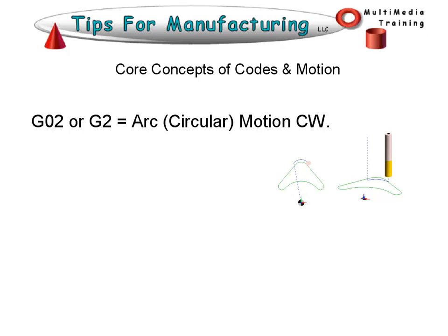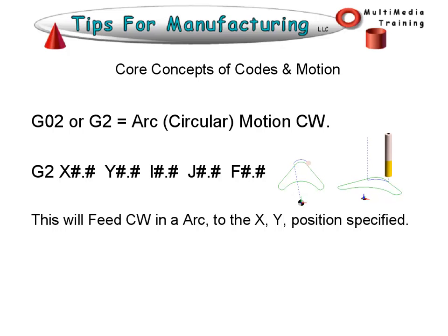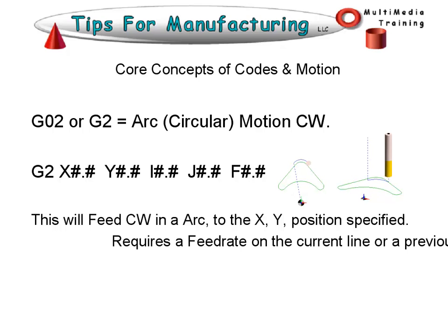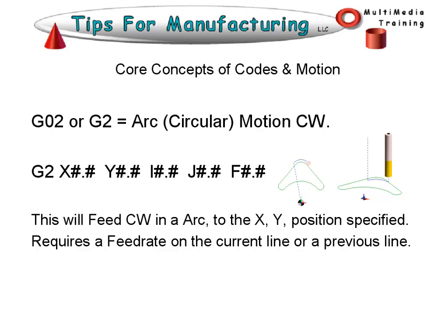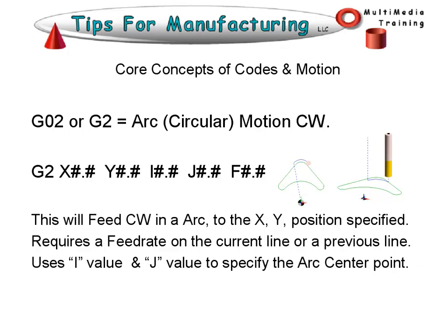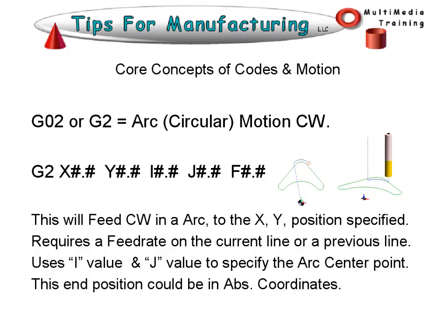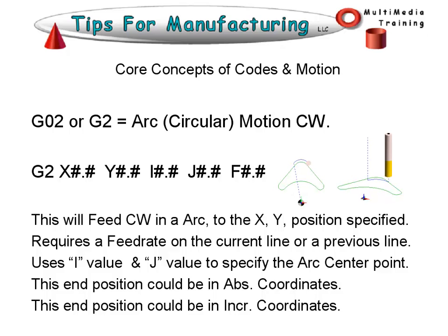G02, or G2, is an arc circular motion command clockwise. You have the G2, the X and Y position, an I and J value, and a feed rate. This will feed clockwise in an arc to the XY position specified. It requires a feed rate on the current line or a previous line, and uses an I value and J value to specify the arc center point. The end position could be in absolute or incremental coordinates.